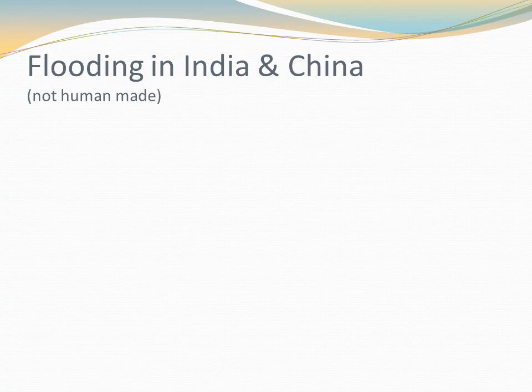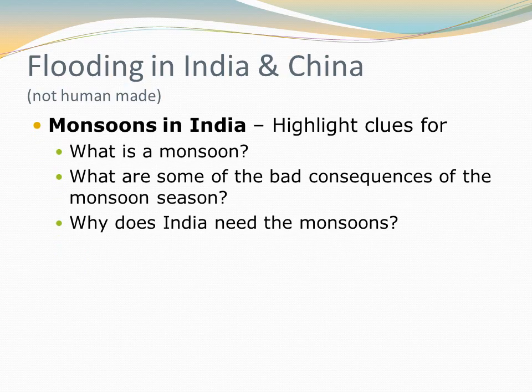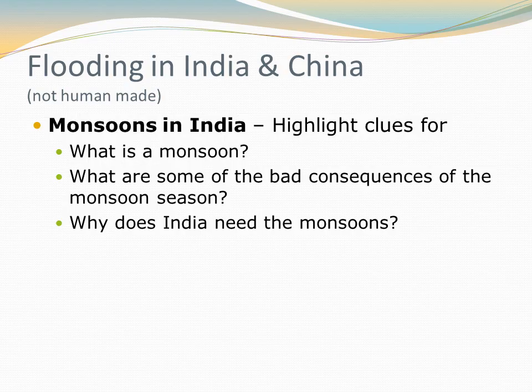Like the last reading, we're going to break this one up and take it in pieces. We'll start with the monsoon section — the first section on monsoons in India. Highlight any clues for these prompts: What is a monsoon? What are some of the bad consequences of the monsoon season? And why does India need the monsoons? Be on the lookout for those topics. Pause the video while you read.